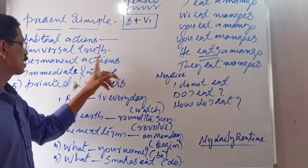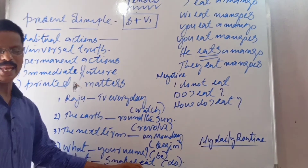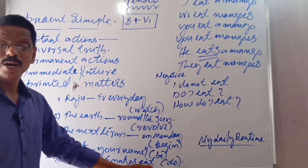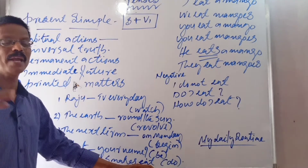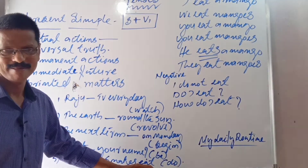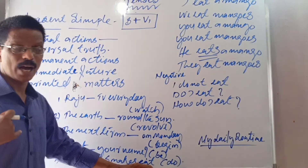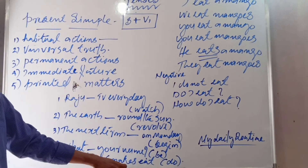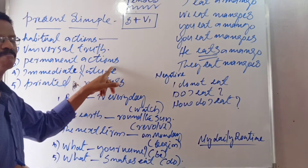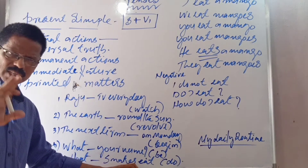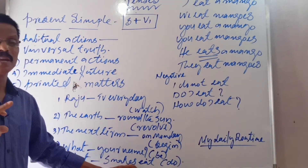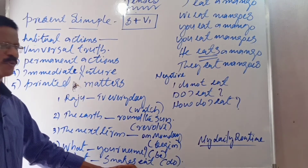Number three: Permanent actions. I have a car — permanent, it's mine forever. I am having a car — at present only, may not be mine. I have a house — my house. I am having a house — may be rented. All permanent actions should be in present simple, whereas temporary actions should be in present continuous tense.